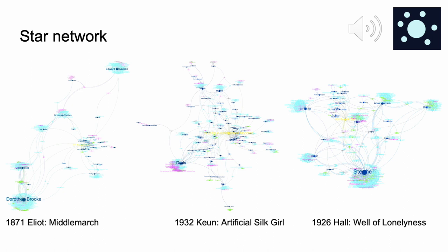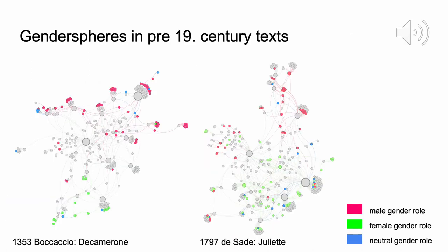We can see that Dorothea's characterization is maximally different from the profile of Edward Casaubon, the man she chooses to marry — from the network they literally have nothing in common, so conflict is unavoidable. We also have two other star networks with the novels 'Artificial Silk Girl' by Keun and 'The Well of Loneliness' by Hall. Coming back to searching for features that are more or less distinctive for characters of different genders, we then turned towards the gender spheres of the novels and found something interesting.